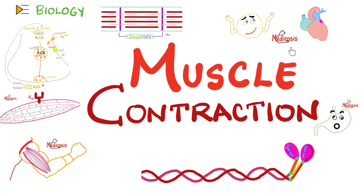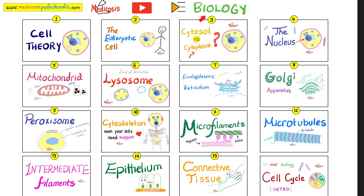It's Medicosis Perfectionalis, where medicine makes perfect sense. In the previous videos, we talked about skeletal muscle, the microscopic structure of these muscles, the difference between muscles, muscle fibers, myofibrils, myofilaments, sarcomeres, etc. We compared among skeletal muscles, cardiac muscles, and smooth muscles. In today's video, we'll talk about the mechanism of muscle contraction. Please watch these videos in order.